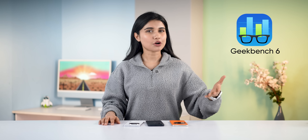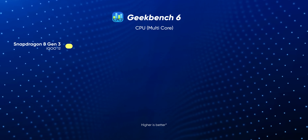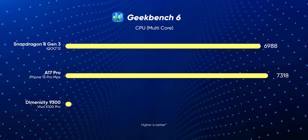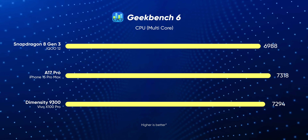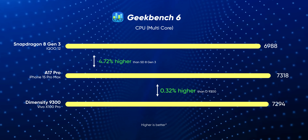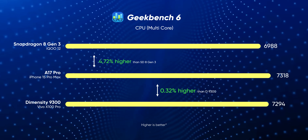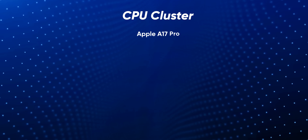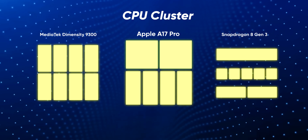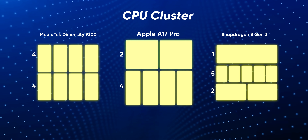So I went with Geekbench 6 next, which is a proper cross-platform benchmarking application. As you can see, the Snapdragon 8 Gen 3 and the Dimensity 9300 have essentially caught up with Apple in terms of multi-core CPU performance, with Apple holding onto a mere 4.7% victory over Qualcomm and an almost negligible 0.3% lead over MediaTek. It's impressive to see the A17 Pro sitting at the top with a 6-core CPU setup versus an 8-core CPU on the other two.